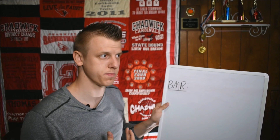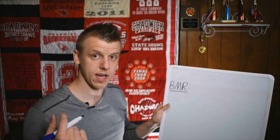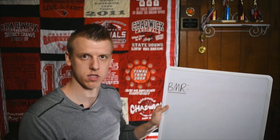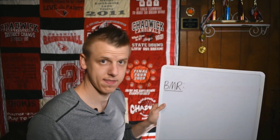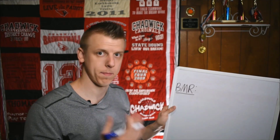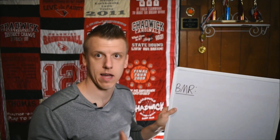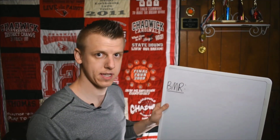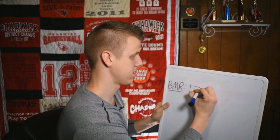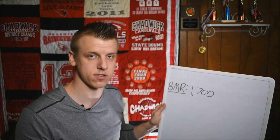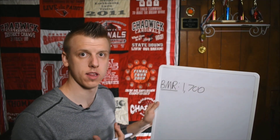The way I find BMR is by using a BMR calculator — I'll link it in the description if you want to find yours. You just plug in your height, weight, age, and gender, and that gives you your basal metabolic rate. For this example I'm going to use 1700, so let's say your basal metabolic rate is 1700. Once you have that number, you have to add in the activity factor.